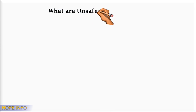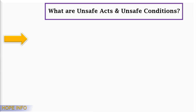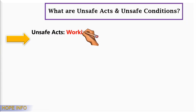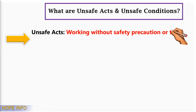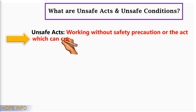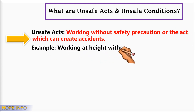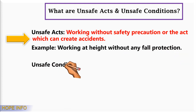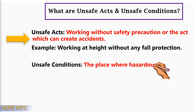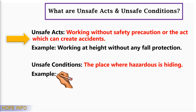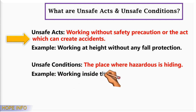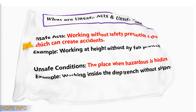What are unsafe acts and unsafe conditions? An unsafe act is working without safety precautions, or any act which can create accidents — for example, working at height without any fall protection. Unsafe conditions are places where hazards are present — for example, working inside a deep trench without sloping.